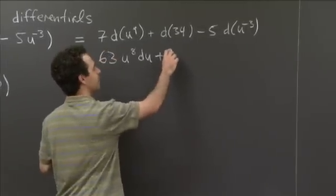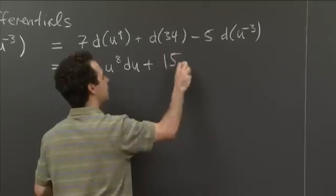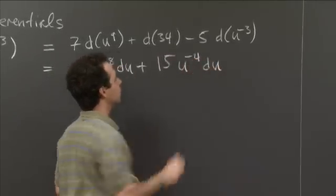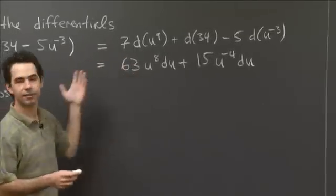Good, so I get to keep my plus sign. Plus 15u to the minus 4 du. OK, and so that's all there is to that.